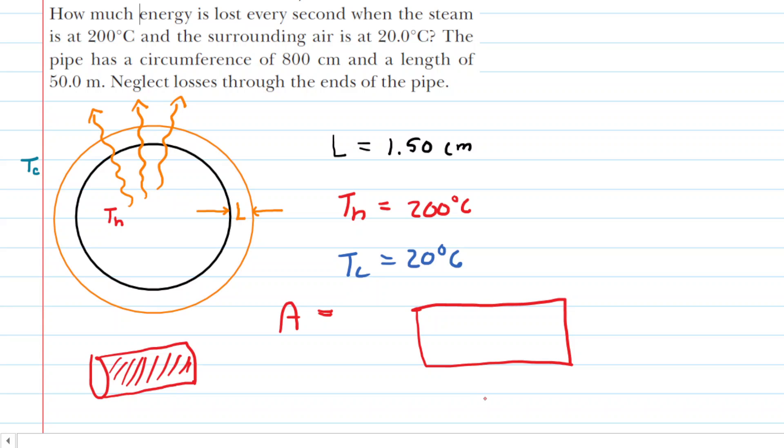That rectangle could be denoted by a length L, and this dimension right here would actually be the circumference of the pipe. We can easily calculate the area because the circumference was given as 800 centimeters and the length of the pipe was given as 50 meters.